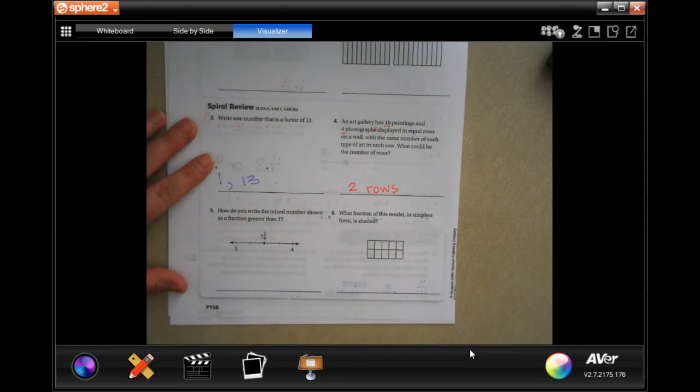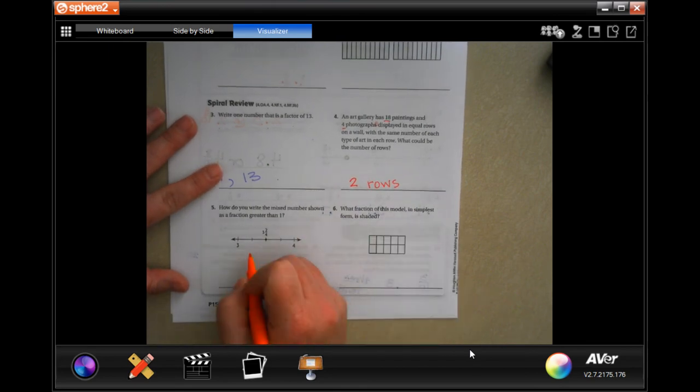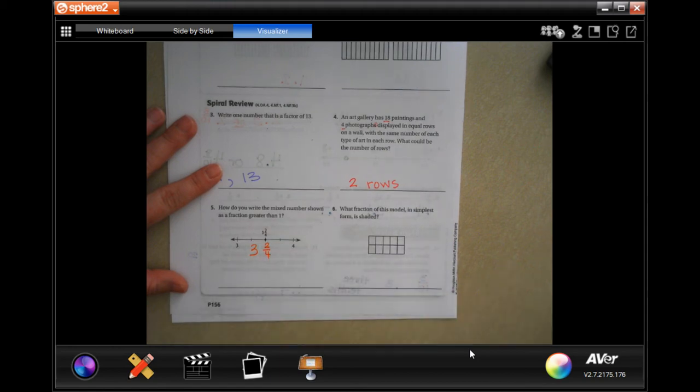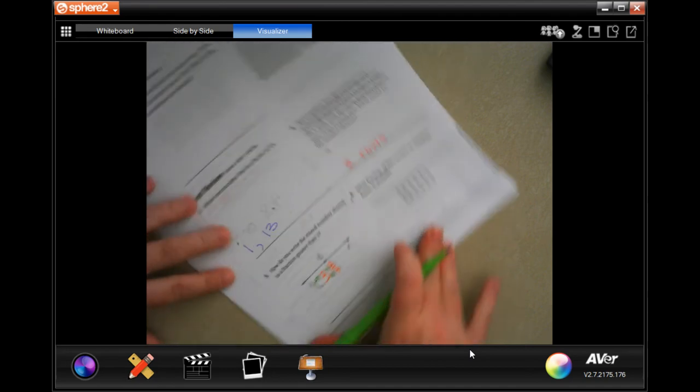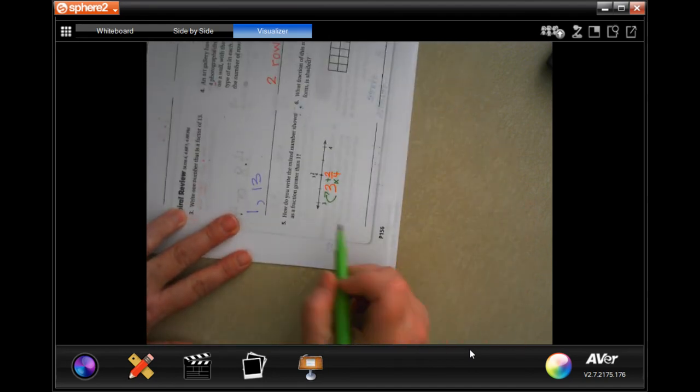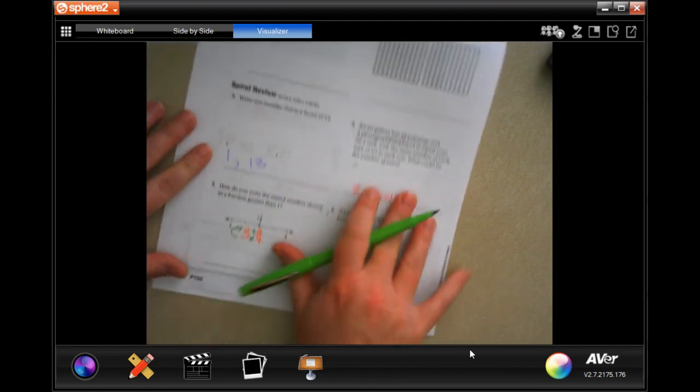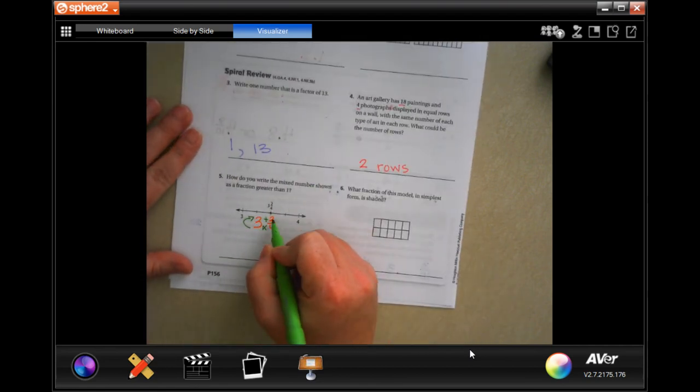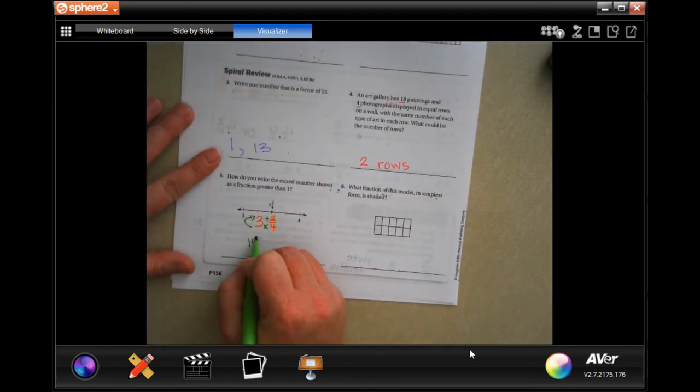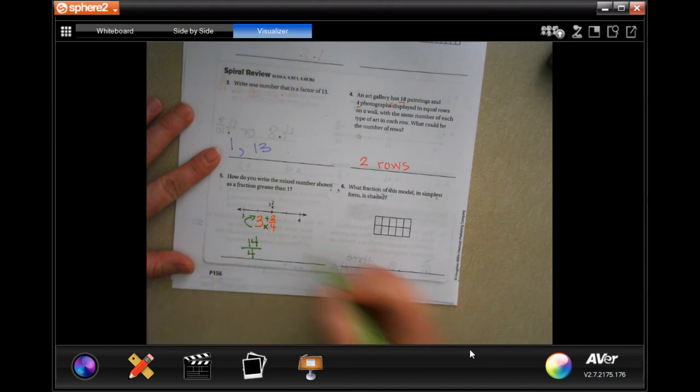How do you write the mixed number shown as a fraction greater than one? So we need to do dead man. So three and two fourths, and we are going to do dead man, where we affectionately call him dead man. So four times three is twelve, plus two more is fourteen, and we keep our denominator. Done.